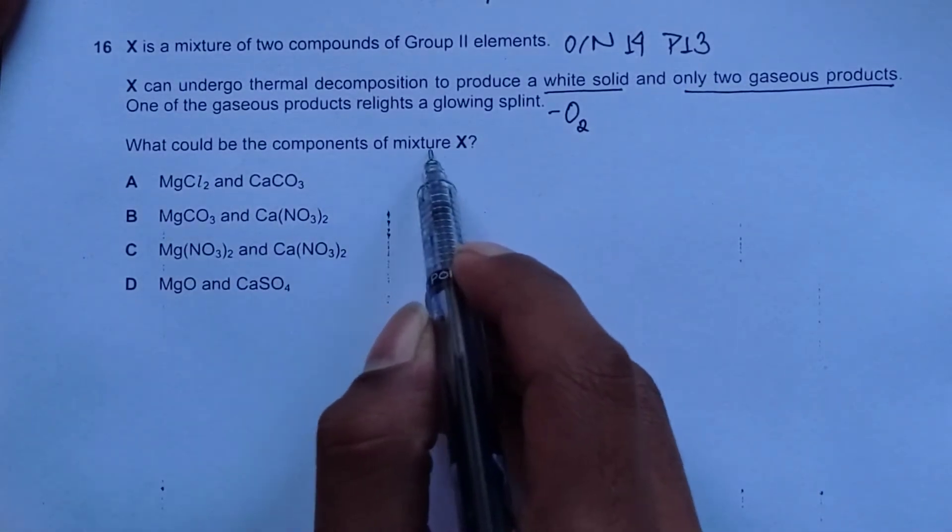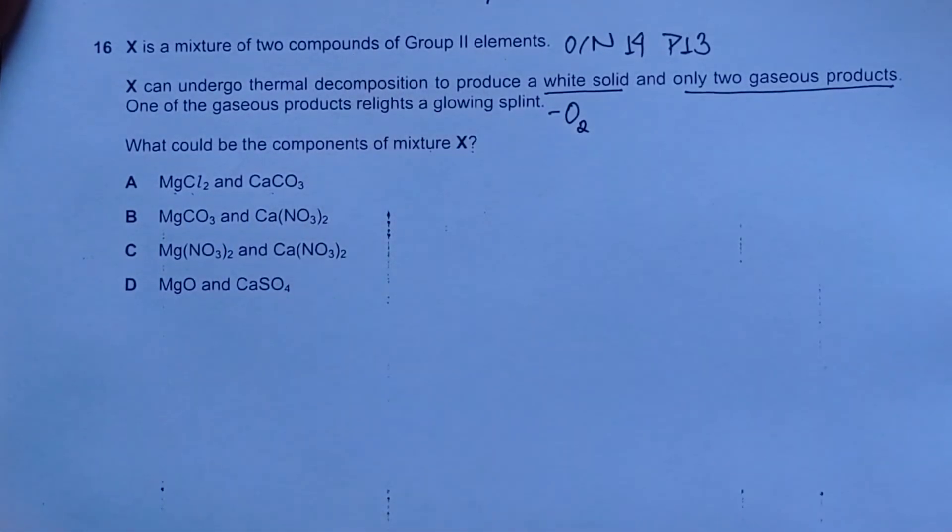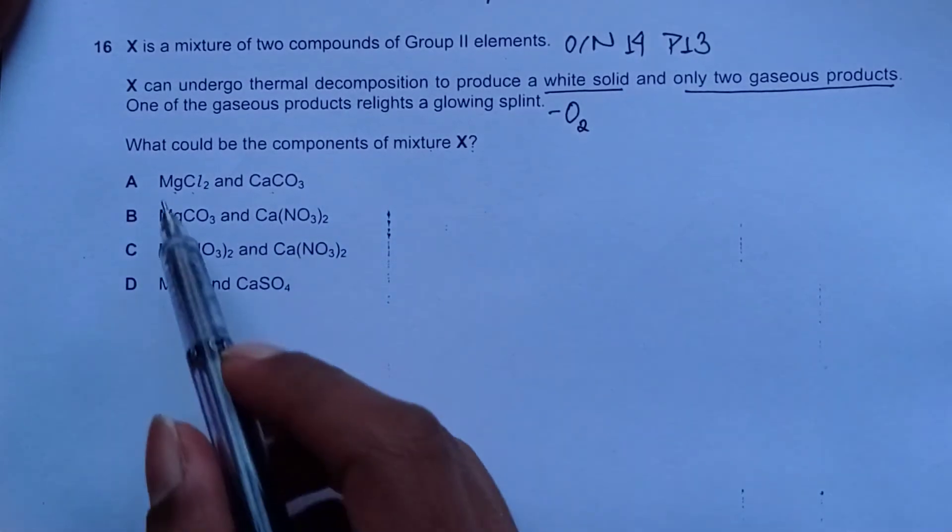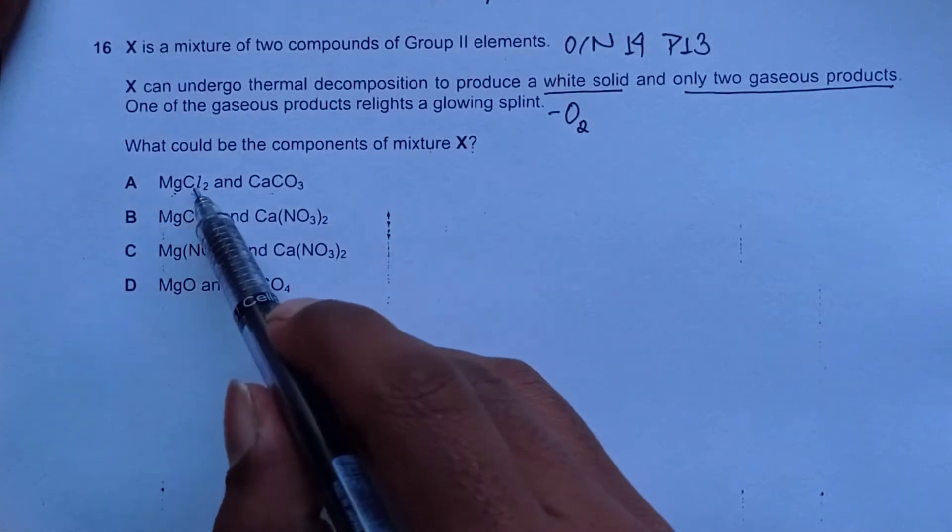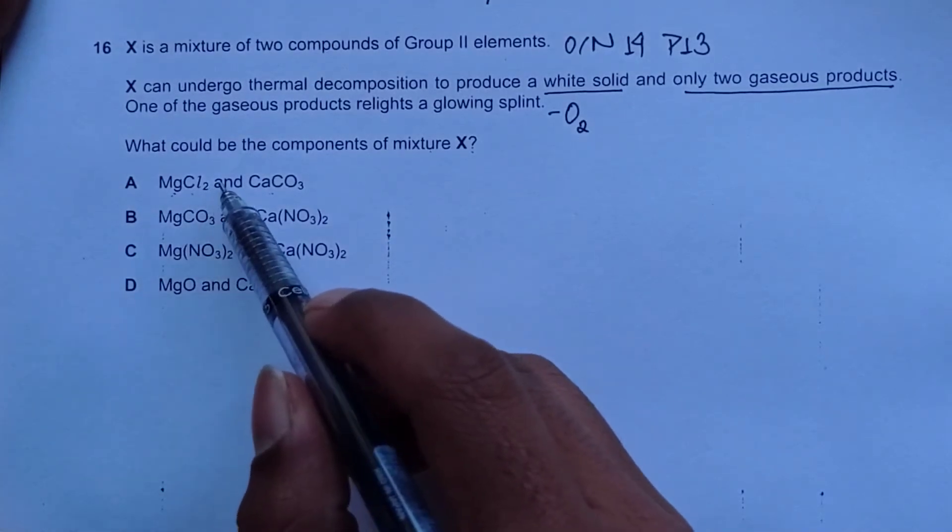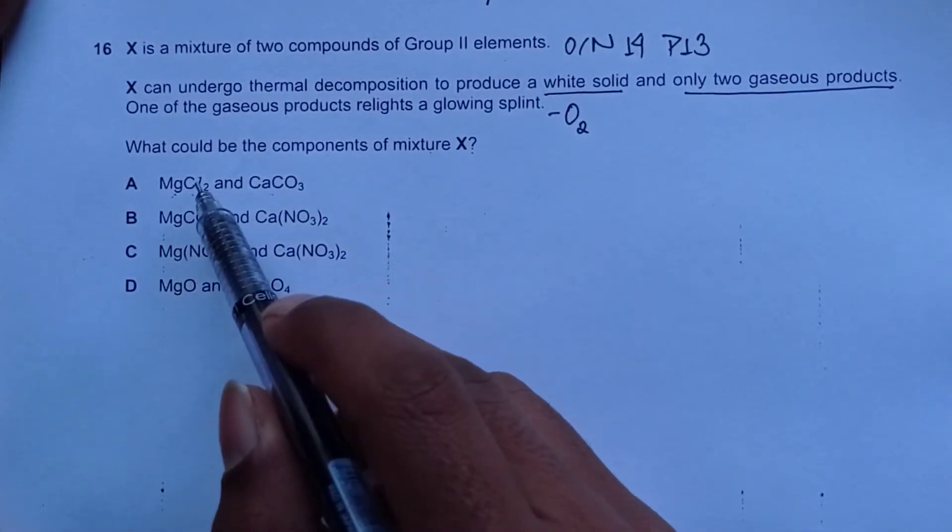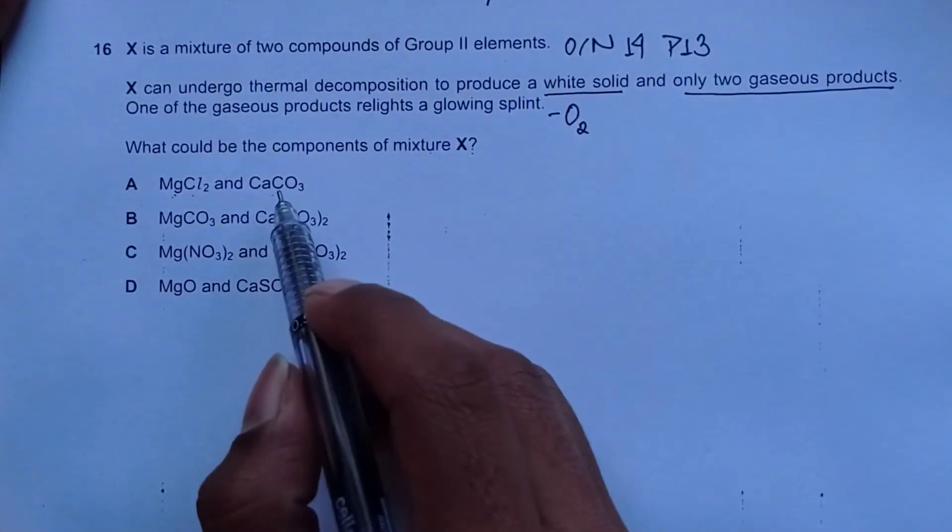What could be the components of mixture X? Option A: MgCl2 and CaCO3. Two compounds of Group 2 elements, both of these are Group 2 elements, magnesium and calcium. Magnesium chloride does not undergo thermal decomposition at all. Our only product will be white solid. Let's assume magnesium chloride is white solid and only two gaseous products.